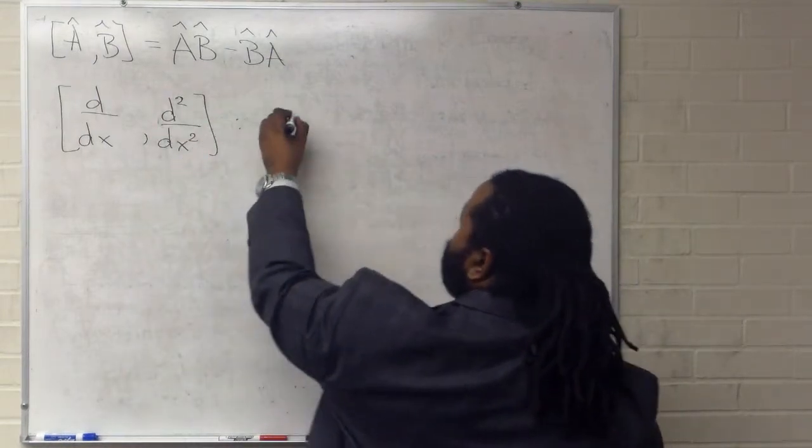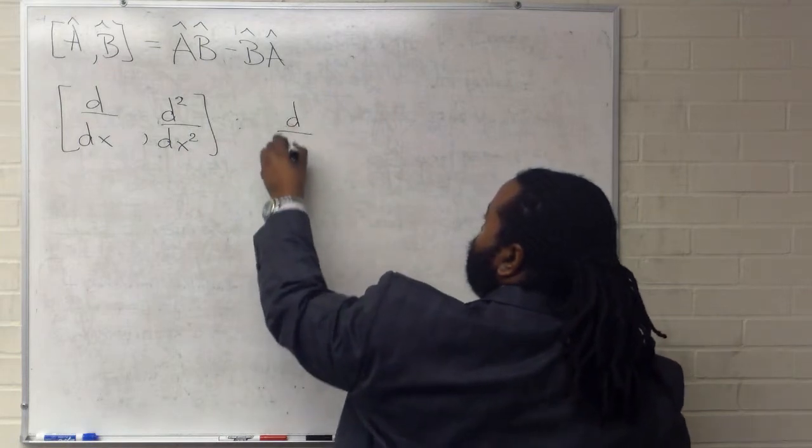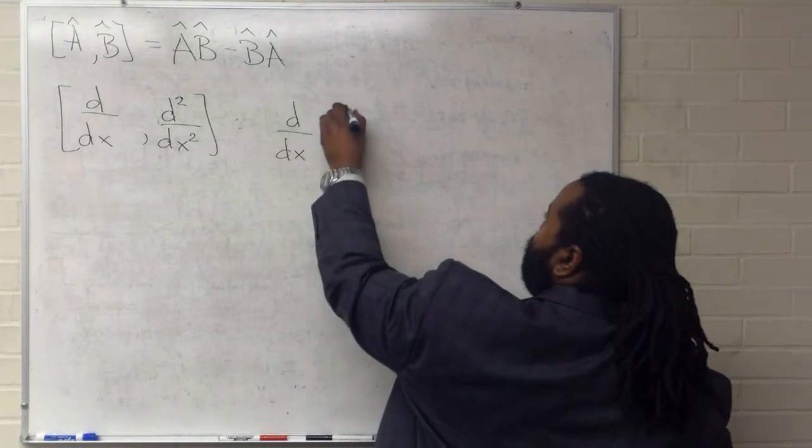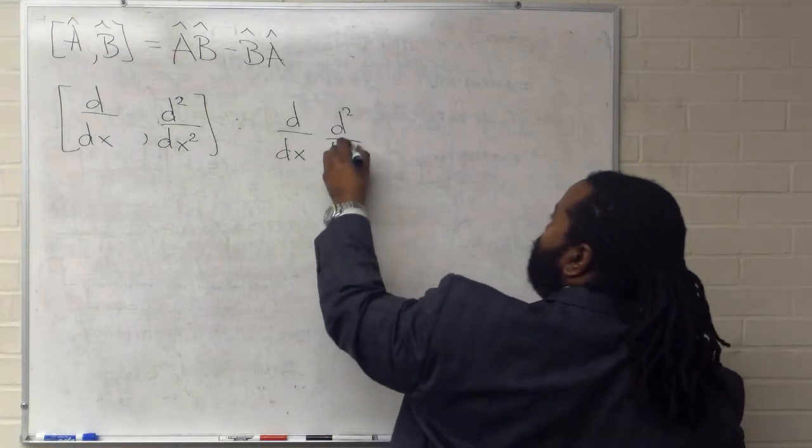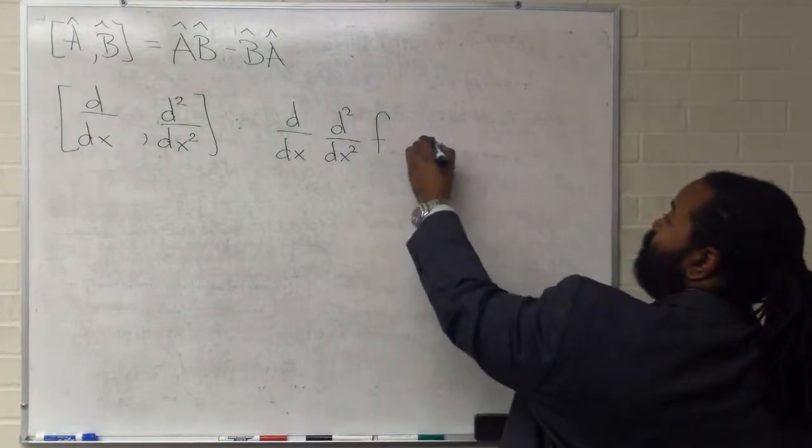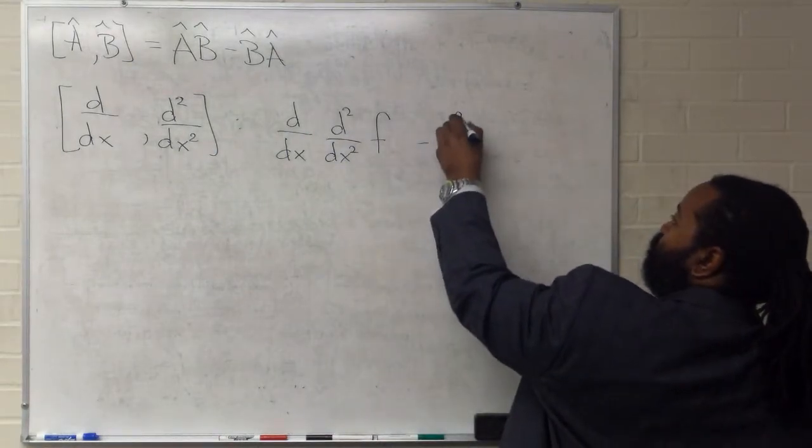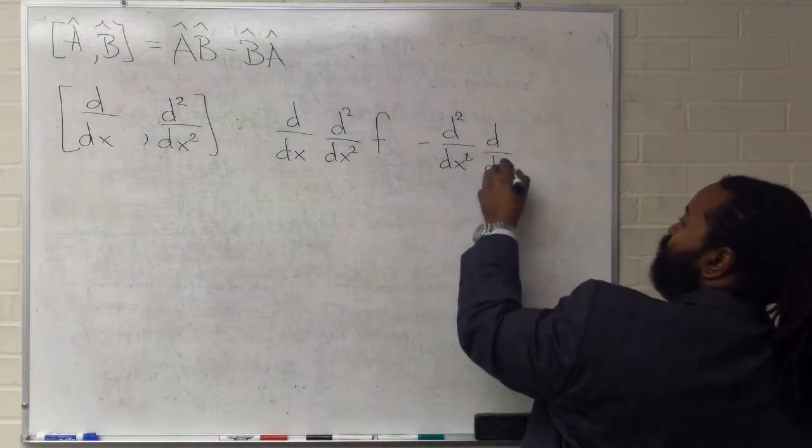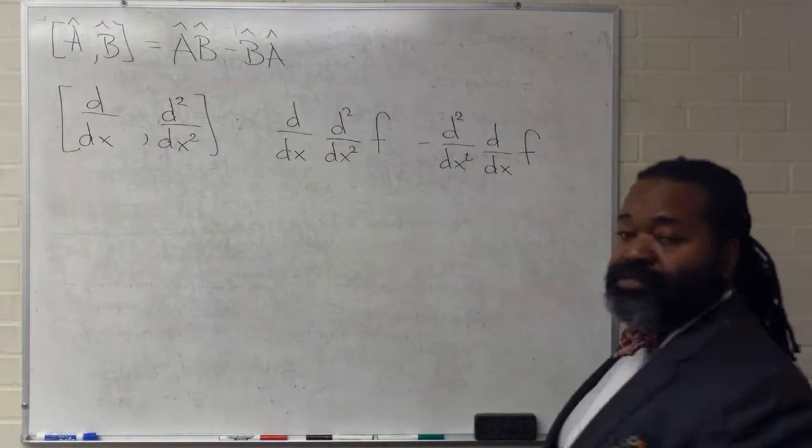So in order to do this, A then B acting on some test function, we'll subtract B then A acting on the test function.